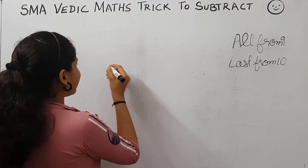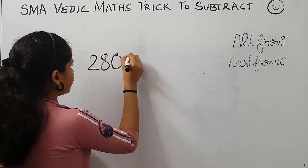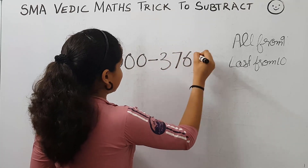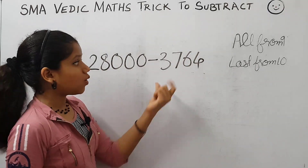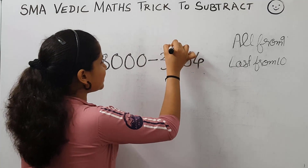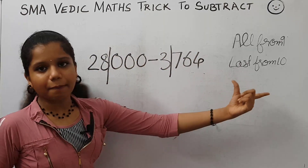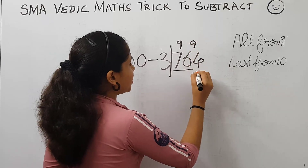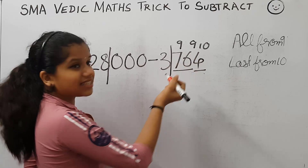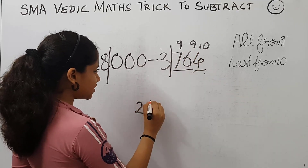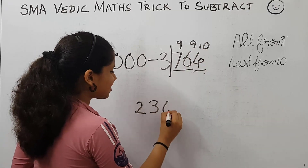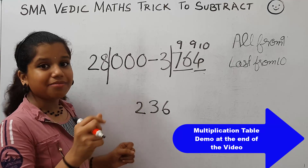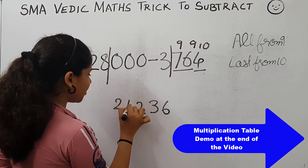Now let's take another question: 28,000 minus 3,764. Here there are three zeros and four digits. We put a slash here and here, then apply the rule: all from 9 and last from 10. 9 minus 7 is 2, 9 minus 6 is 3, 10 minus 4 is 6. Then we subtract: 28 minus 3 is 25, and 25 minus 1 is 24. The answer is 24,236.